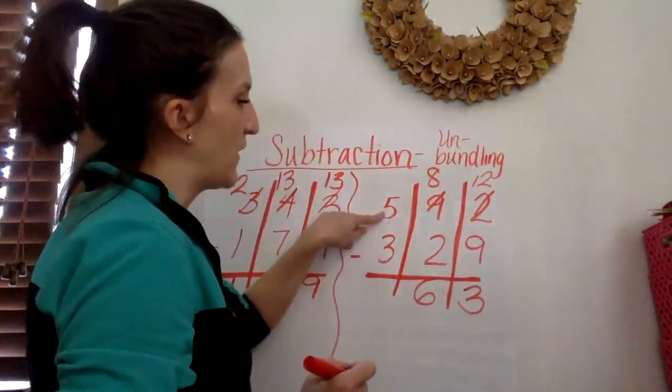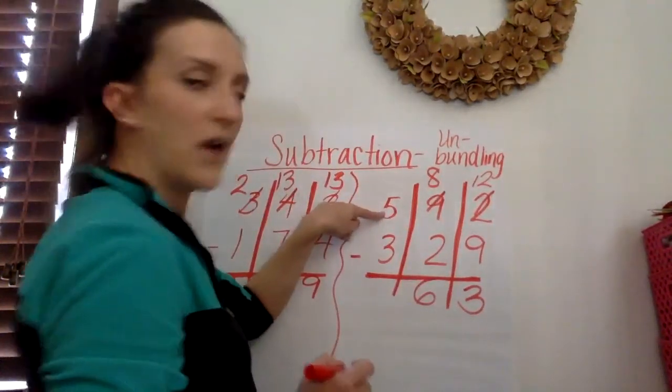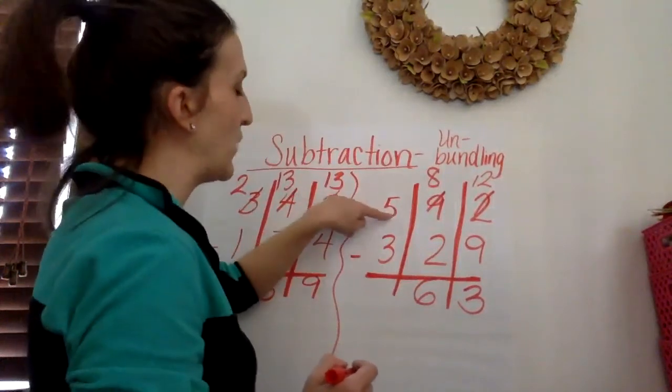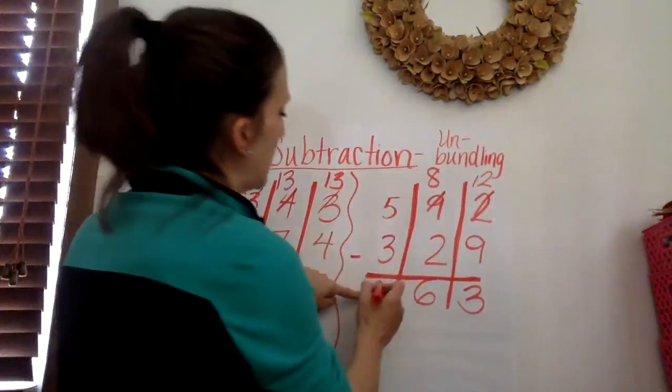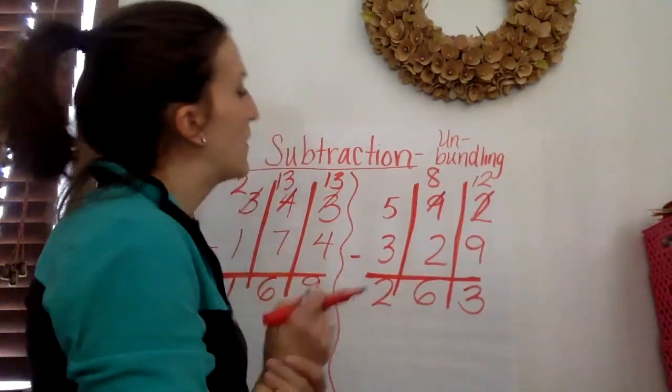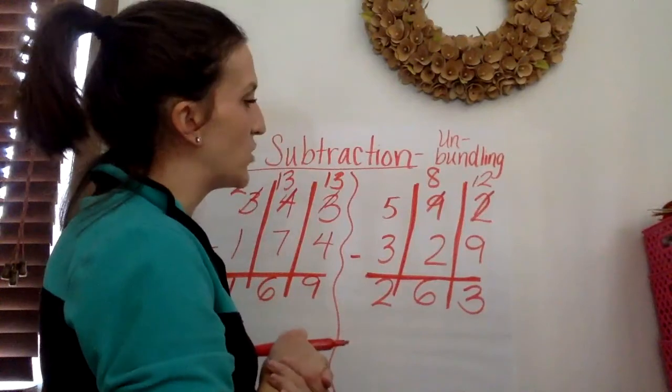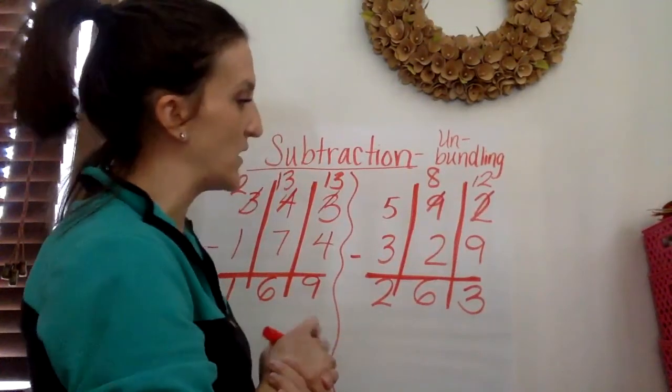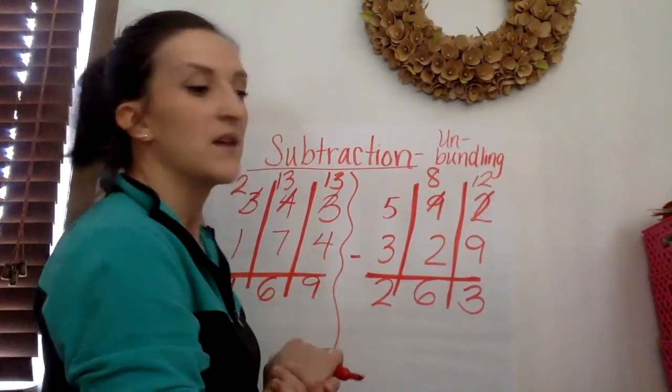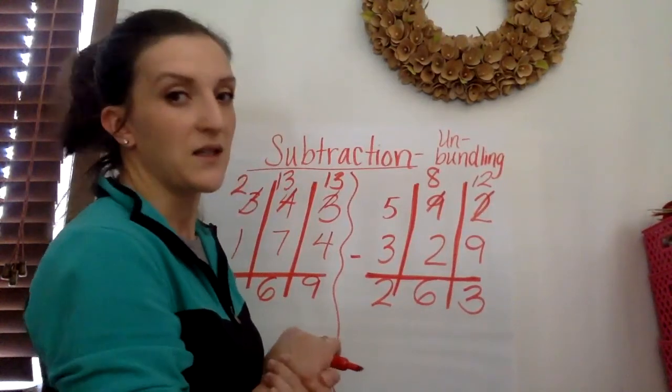Now over in the hundreds place. Is the number on top bigger? It is. We can subtract straight down. 5 minus 3 equals 2. So the difference of 592 minus 329 equals 263.